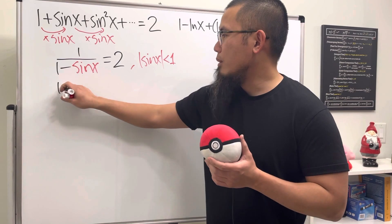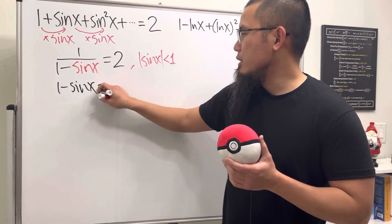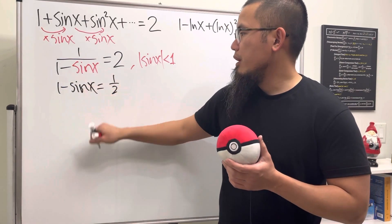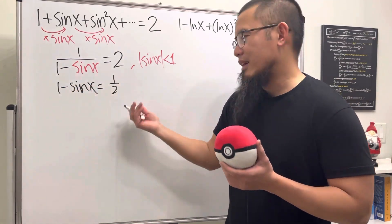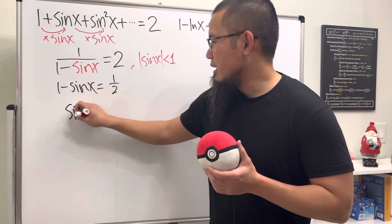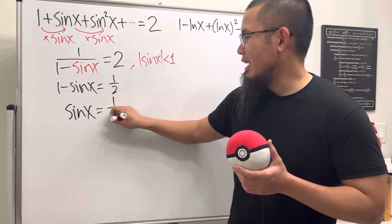So you get one minus sin x being equal to one over two, and then you can put this to the other side and then minus. One minus one half has to be one half, right? So we know that sin x has to be equal to one half.